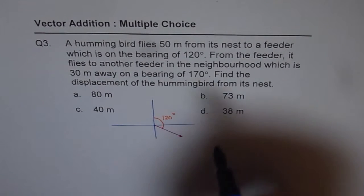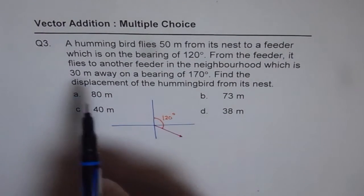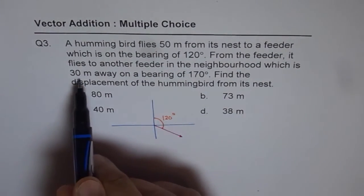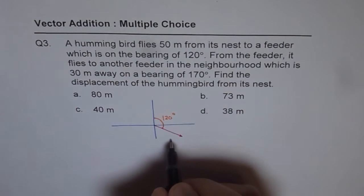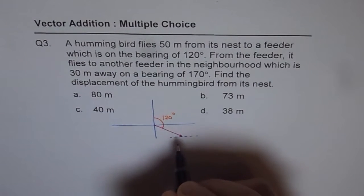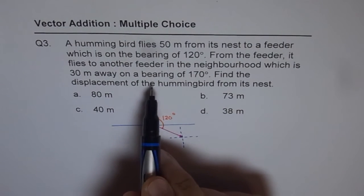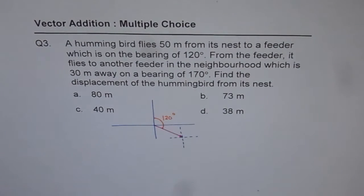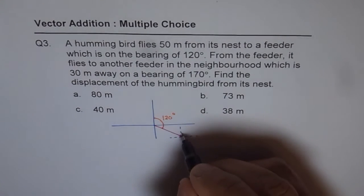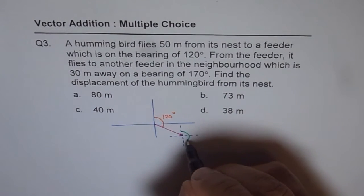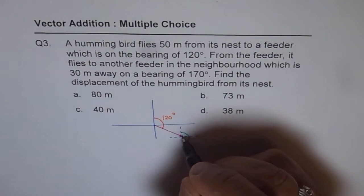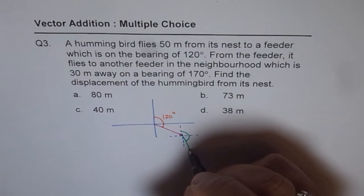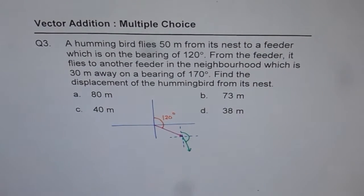Now, at this stage, from the feeder, it flies to another feeder in the neighborhood which is 30 meters away. Now here again, it is better to draw the Cartesian plane. 30 meters away on a bearing of 170 degrees. Now, 170 degrees is 10 less than 180. So, that means from here, it is kind of almost 180. A bit smaller line, less than this one. That becomes 30 for us.